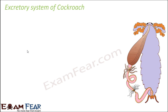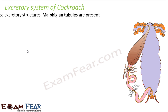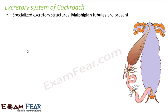Now we will talk about the excretory system — how cockroaches get rid of the waste products present in the body. After the excretory system we will discuss the last topic, the reproductive system. Cockroaches have specialized excretory structures called Malpighian tubules.